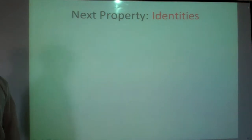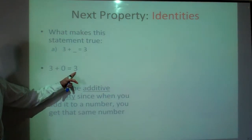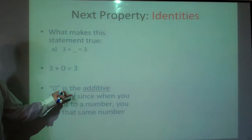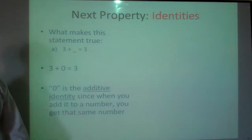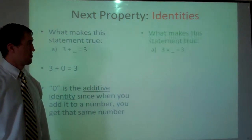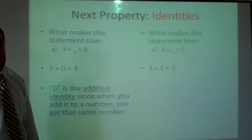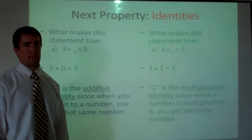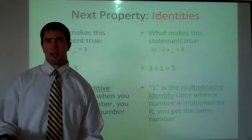Our next property is identities. What would make this statement true: three plus blank equals three? Three plus zero equals three. Whenever we add zero to something we get the same thing we started with — that is why zero is the additive identity. For multiplying, three times what gives you three? That's three times one. We say one is the multiplicative identity, since when you multiply by one you get the same thing.